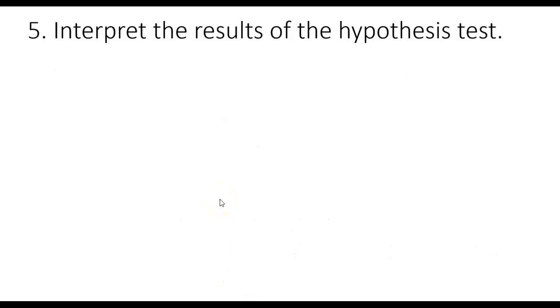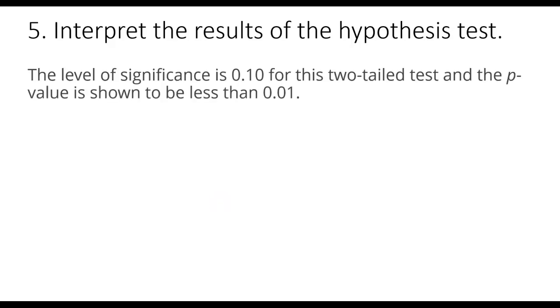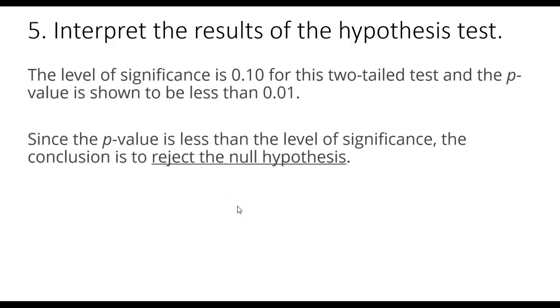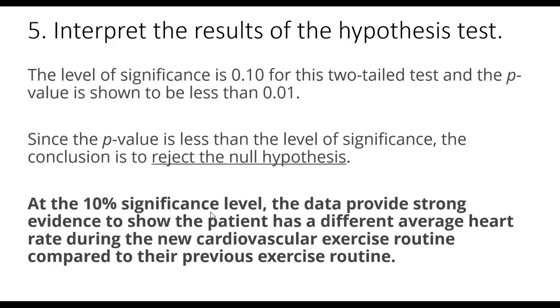Now, when we are interpreting the results, we're going to compare the p-value to that of alpha. Now, the level of significance, or alpha, is 0.10 for this two-tailed test, and we know that our p-value is less than 0.01. So very easy to see that the p-value is less than the level of significance, and therefore we will reject the null hypothesis. Therefore, the interpretation at the 10% significance level, the data provides strong evidence to show the patient has a different average heart rate during the new cardiovascular exercise routine compared to their previous exercise routine.